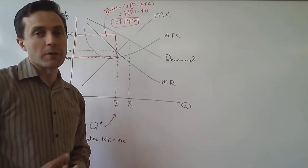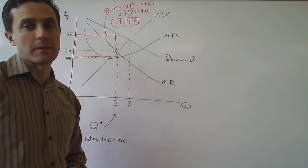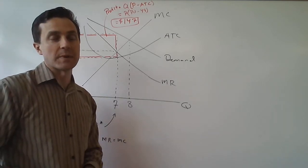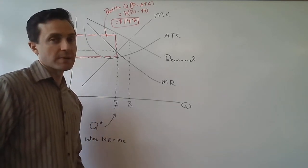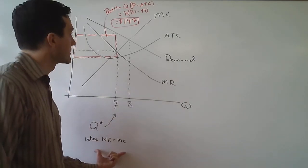Suppose we want to figure out this firm's profits, assuming that they're going to strive to maximize their profits. If they're going to maximize their profits, that means they want to choose the quantity where marginal revenue equals marginal cost.